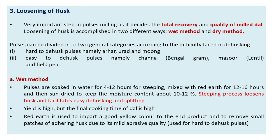Wet method: pulses are soaked in water for 4 to 12 hours for steeping, mixed with red earth for 12 to 16 hours, and then sun dried to keep the moisture content at about 10 to 12 percent. The steeping process loosens the husk and facilitates easy dehusking and splitting. The yield is high, but the final cooking time of dal is also high in the wet method.